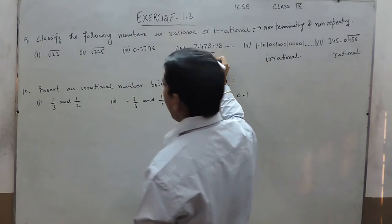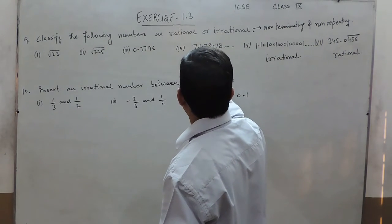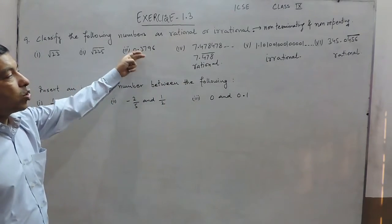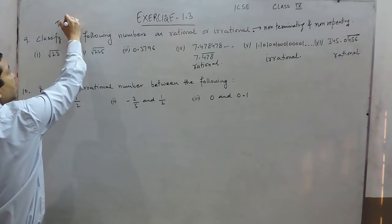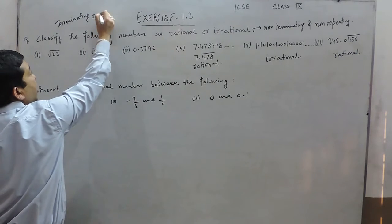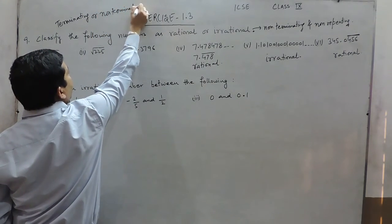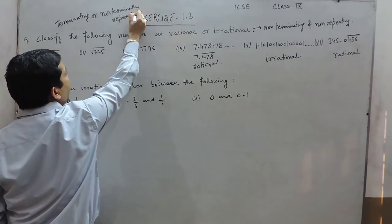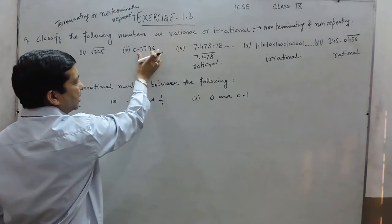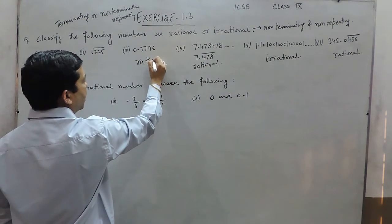This again can be written as 478 with a bar, which means this is also a rational number. Here it is a terminating number. All numbers which are terminating, or non-terminating repeating, are known as rational numbers. So this is a terminating number because it has only four digits after the decimal place, so this is also a rational number.